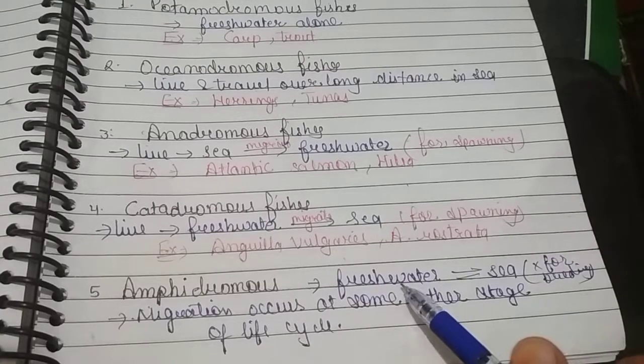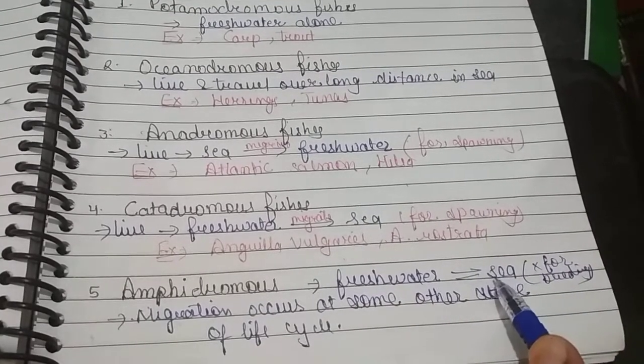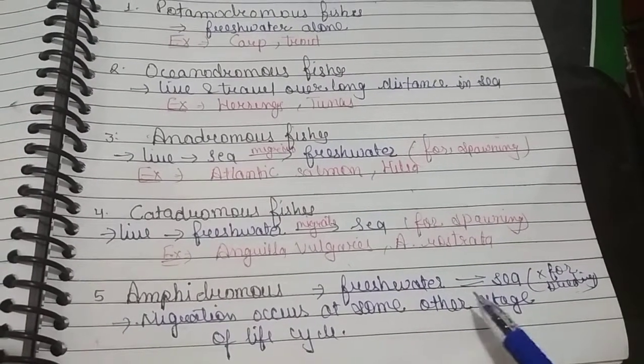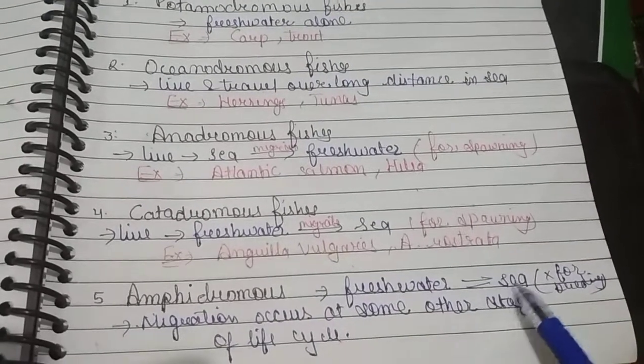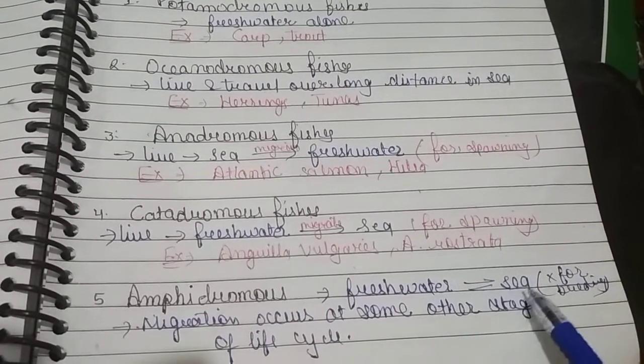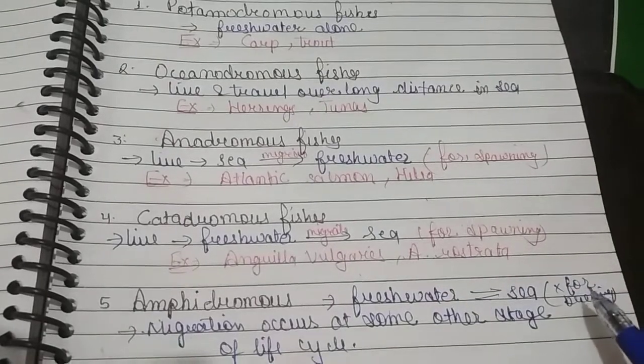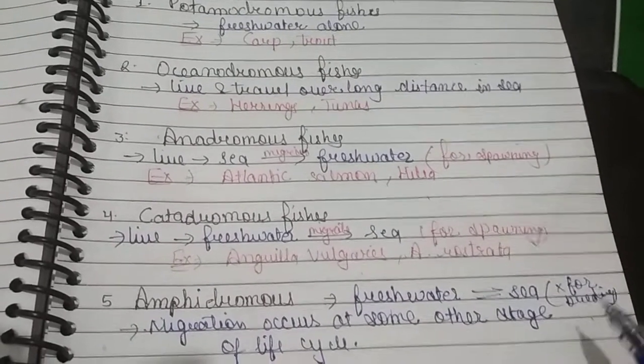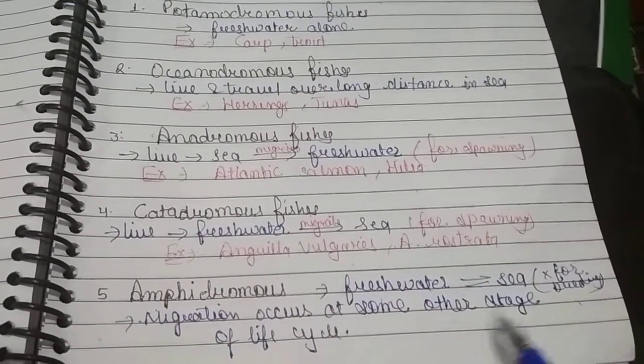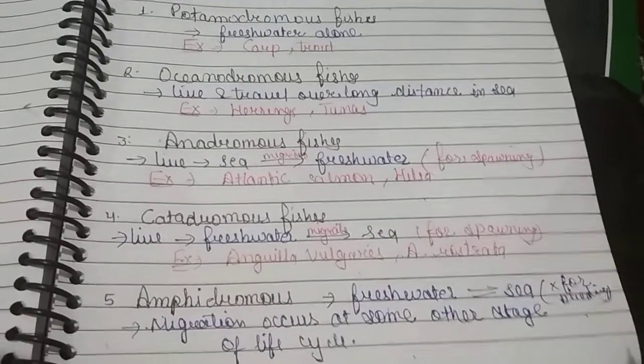live in both freshwater and seawater, meaning they freely move between freshwater and sea, but not for breeding purposes. Migration occurs at other stages of their life cycle. Thanks for watching.